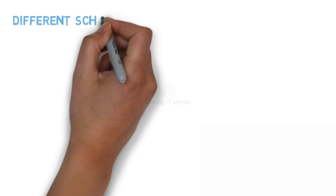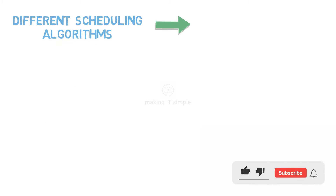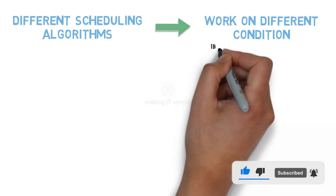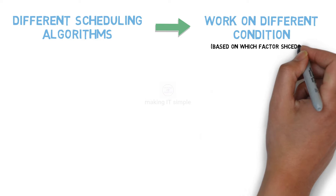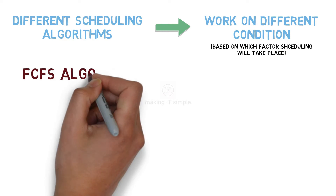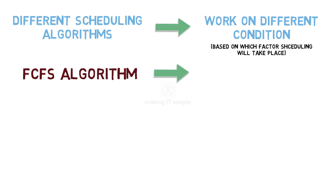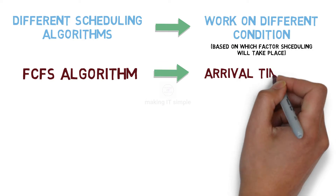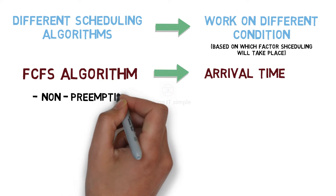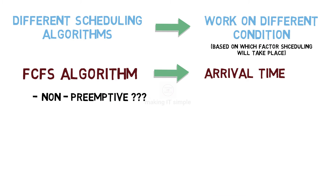There are many scheduling algorithms, each working on a different scheduling principle — basically, which process will get executed by the CPU and in which order. FCFS, our today's algorithm, schedules processes based on their arrival time, similar to the ticket counter: whoever comes first gets sent for CPU execution first. Also, FCFS is a non-preemptive scheduling algorithm. Now, what does that mean?